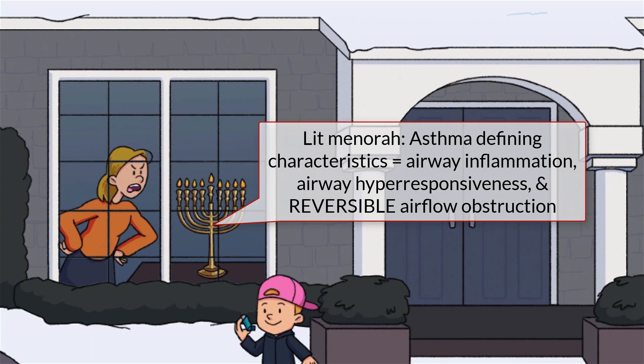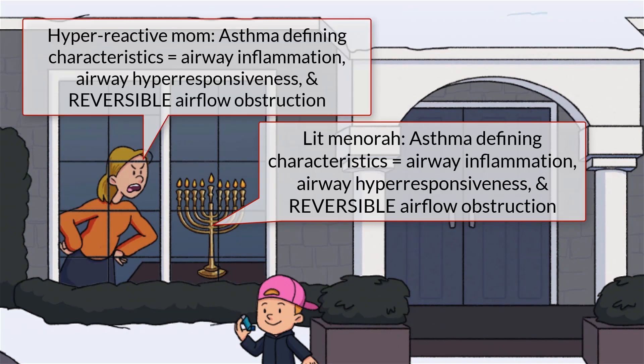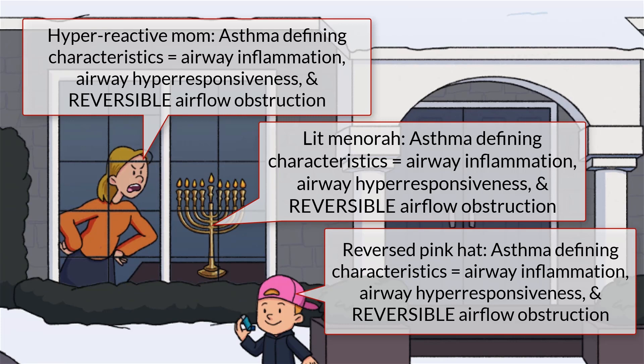Asthma is an airway disease defined by a triad of processes: airway inflammation, airway hyper-responsiveness, and reversible airflow obstruction.